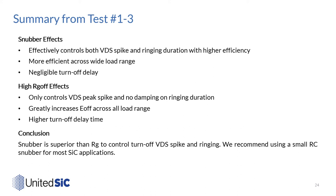From tests 1 to 3, we find that snubber is more effective to control both VDS spike and ringing duration than using high RG off. Snubber is also more efficient than using high RG off, and there is no penalty in gate delay time. Therefore, we recommend using a small RC snubber for most silicon carbide applications.